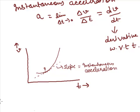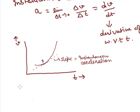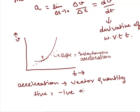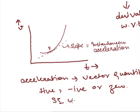Since velocity of a moving object has both magnitude and direction, likewise acceleration, depending on velocity, has both magnitude and direction. So acceleration, like velocity, is a vector quantity. Acceleration can also be positive, negative, or zero. The SI unit of acceleration is meter per second square. In our next video we will discuss motion with constant acceleration.